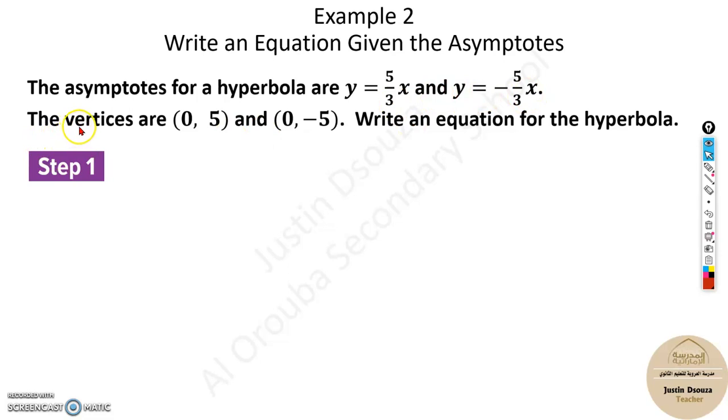The vertices are (0, 5) and (0, -5). Write the equation of the hyperbola. The vertices are given over here. Let's graph this. Imagine this is (0, 5) up here—there is one vertex—and (0, -5). This is very important: if the vertices are like this, it's going like this and like this.